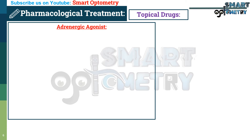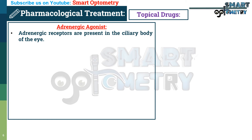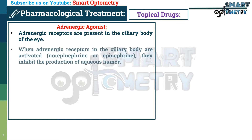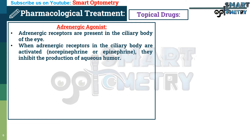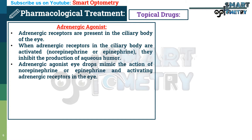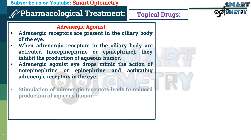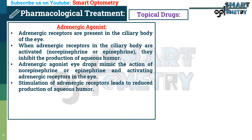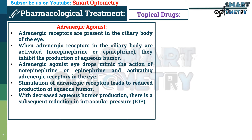Adrenergic receptors are present in the ciliary body of the eye. When adrenergic receptors in the ciliary body are activated, they inhibit the production of aqueous humor. Adrenergic agonist eye drops mimic the action of norepinephrine or epinephrine, activating adrenergic receptors in the eye. Stimulation of these receptors leads to reduced production of aqueous humor, with a subsequent reduction in intraocular pressure.